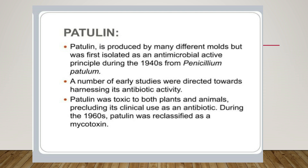Patulin is produced by many different molds but was first isolated as an antimicrobial active principle during the 1940s from Penicillium patulum. A number of early studies were directed toward harnessing its antibiotic activities. However, patulin was found to be toxic to both plants and animals, and this precluded its clinical use as an antibiotic. During the 1960s, patulin was reclassified as a mycotoxin.